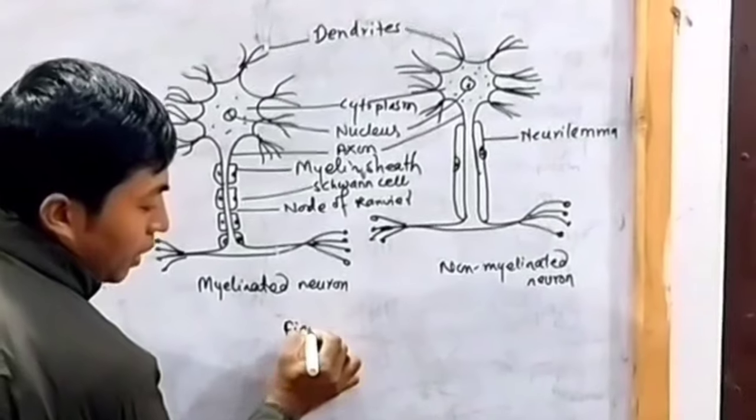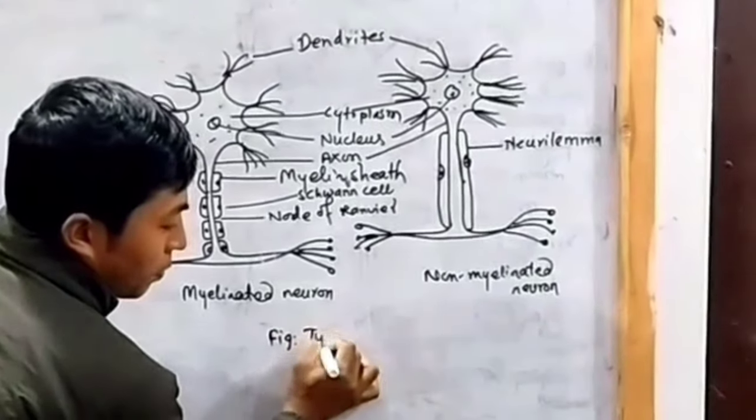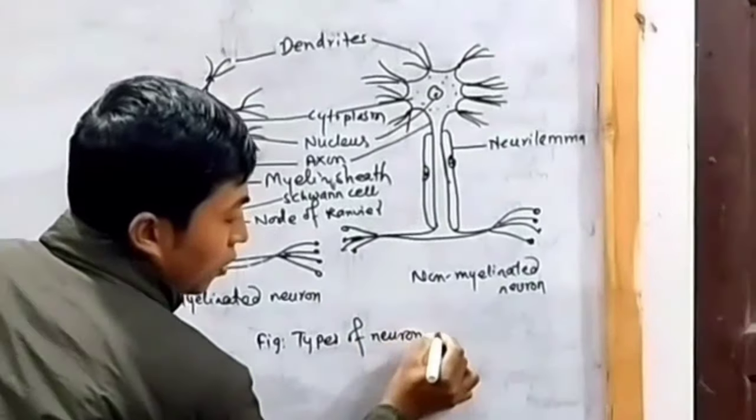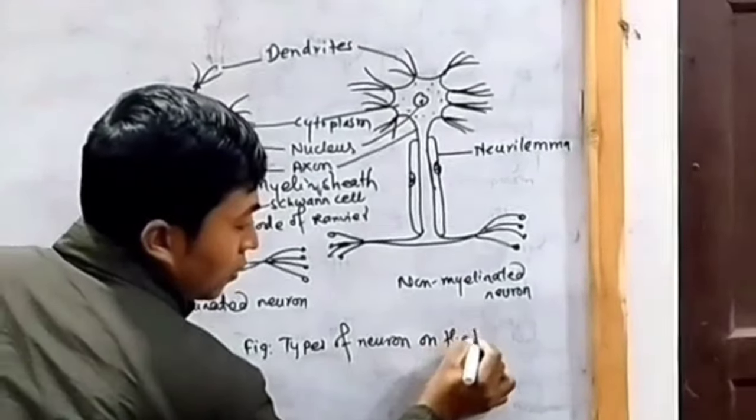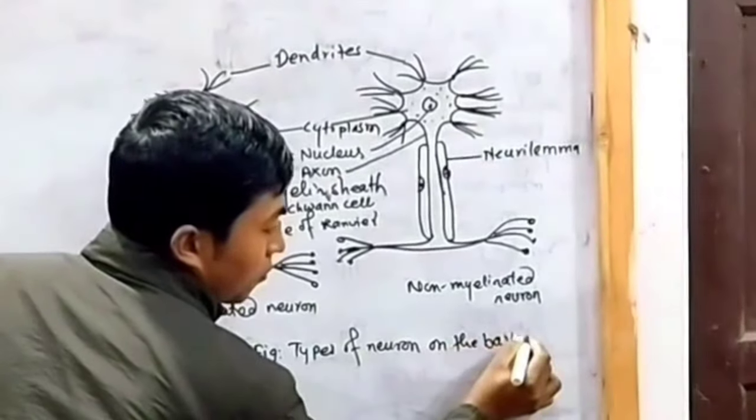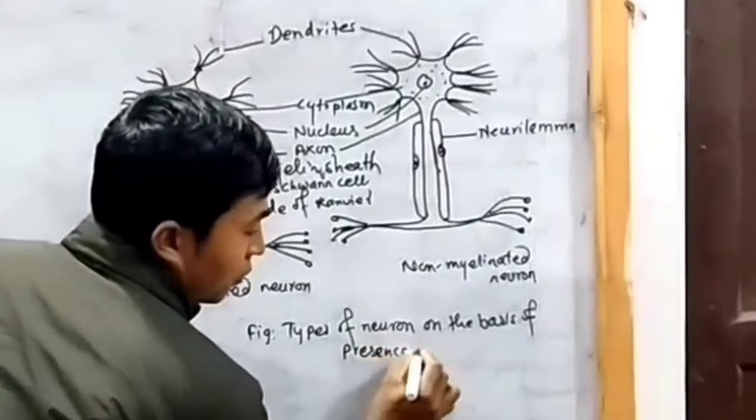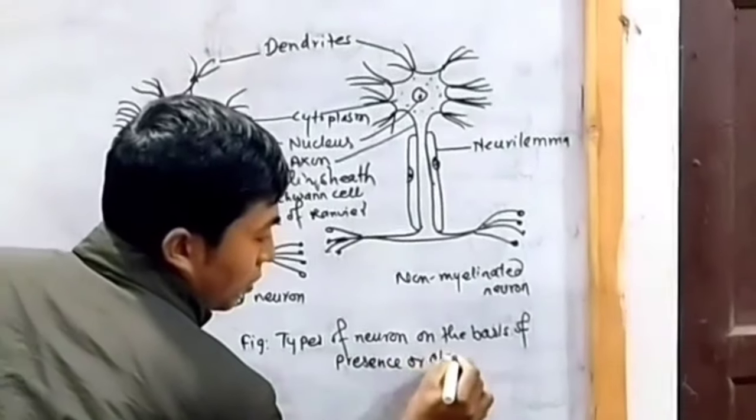These are types of neurons on the basis of the presence or absence of myelin sheath.